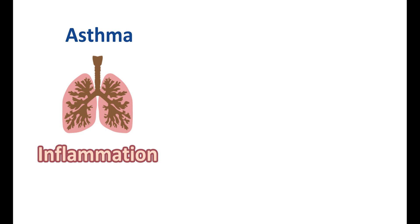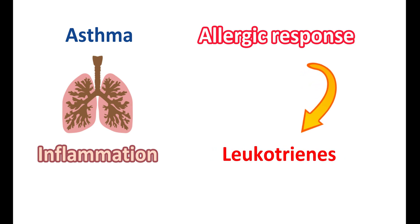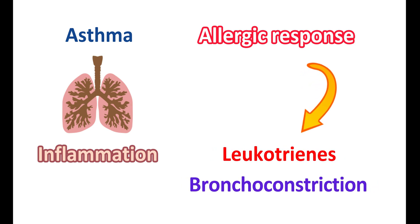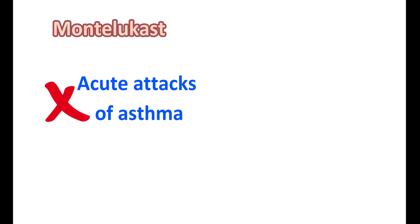Inflammation is also associated with allergic response. In asthma, the allergic response plays an important role. A few people are hypersensitive and may have an allergic response by inhalation of dust mites or pollutants, which act as allergens and stimulate the inflammatory response. During this inflammation, many inflammatory mediators are released; among them, leukotrienes play an important role and can produce bronchoconstriction, resulting in the symptoms of asthma.